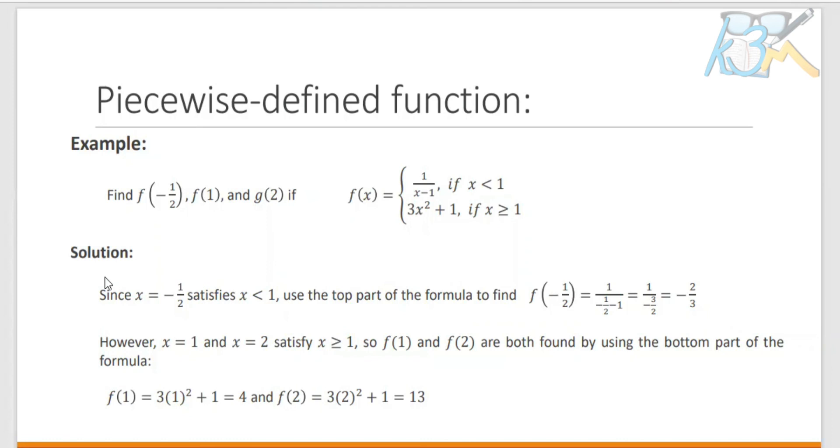Now for our solution. Since x equals negative 1 half, it satisfies x less than 1, so we use the top part of the formula, which is f of x equals 1 over x minus 1. So we substitute negative 1 half: 1 over negative 1 half minus 1. Negative 1 half minus 1 equals negative 3 halves, and 1 over negative 3 halves equals negative 2 thirds.